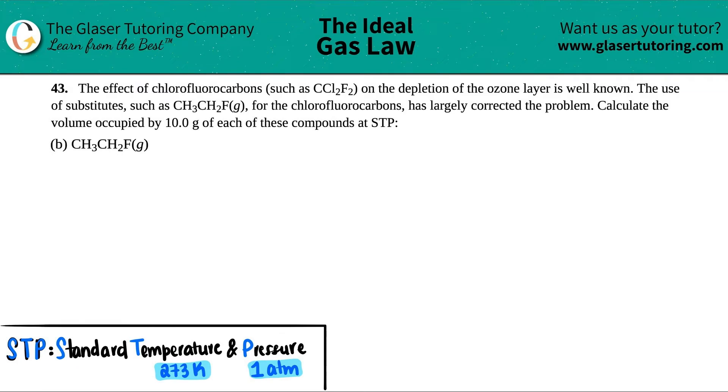Number 43. The effect of chlorofluorocarbons, such as CCl2F2, on the depletion of the ozone layer is well known. The use of substitutes, such as CH3CH2F, which is a gas for the chlorofluorocarbons, has largely corrected the problem. Calculate the volume occupied by 10.0 grams of each of the following compounds at STP.